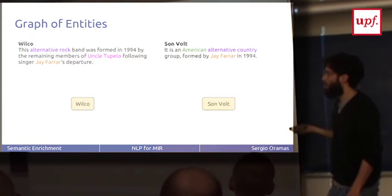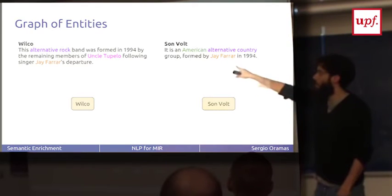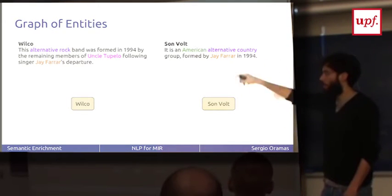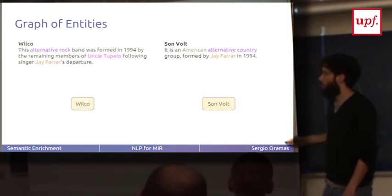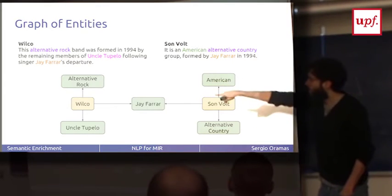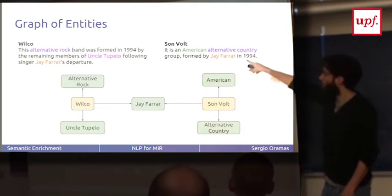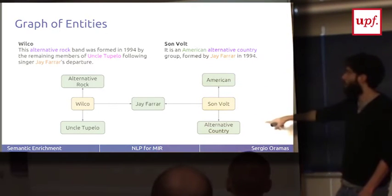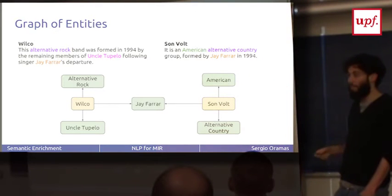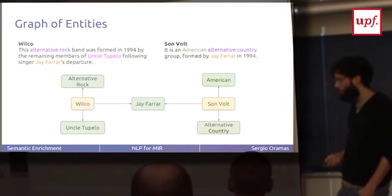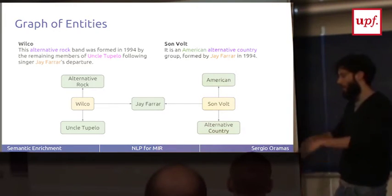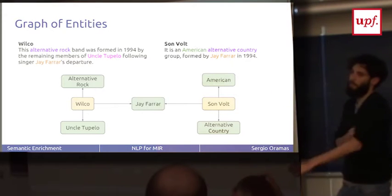So first we have the nodes of the document subjects, so Wilco and Son Volt. And then we have all the entities that were identified in the text and connect them to these nodes. So the entities in Wilco are alternative rock, Jay Farrar, and so on. And Son Volt is American, Jay Farrar, and alternative country. So we build this graph. This is the entity graph of entities. So in this way we can have a set of documents, just apply entity linking and build a graph like this.